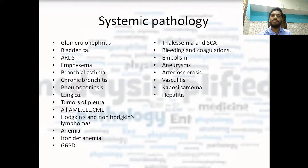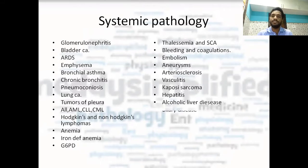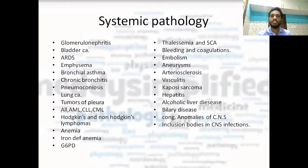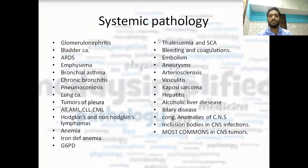Then hepatitis — all the hepatitis viruses, how they are caused, which is the most common hepatitis in chronic setting, and which is the most common in acute — these kinds of questions are asked. Alcoholic liver disease and Mallory-Denk bodies. Congenital anomalies of CNS — you will study this again in pediatrics, but you should know it from pathology first. Inclusion bodies in CNS infections: going through the CNS chapter, there are many diseases like rabies where inclusion bodies are seen, and knowing those inclusion bodies is very important. Most common CNS tumor in adults, most common in children, most common benign and malignant — these questions are asked from CNS tumors. Vegetations in CVS disorders are also important.